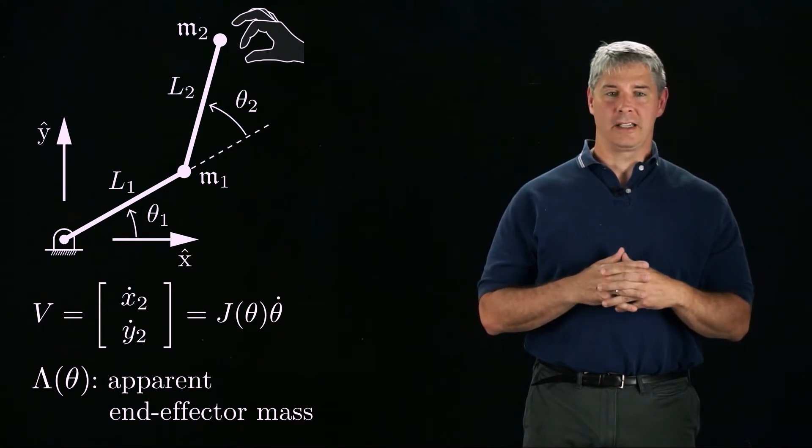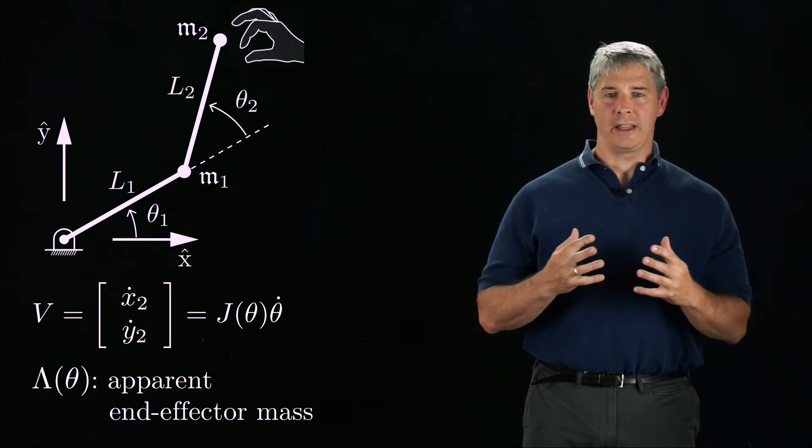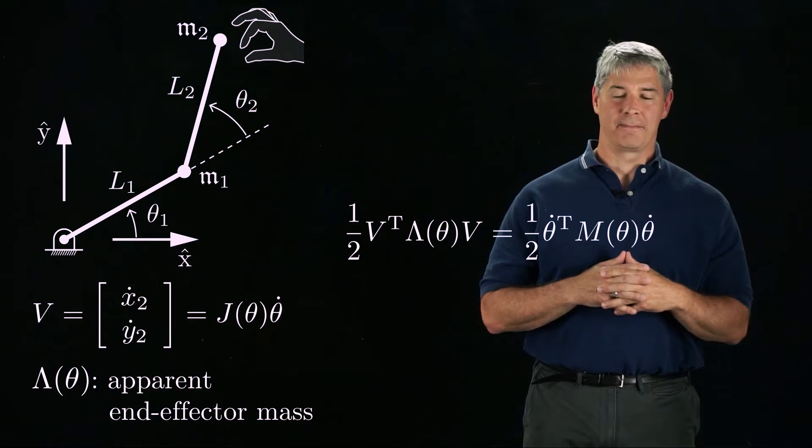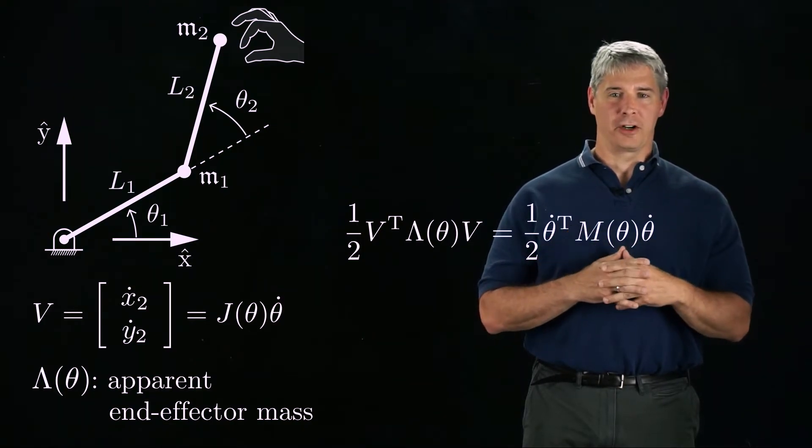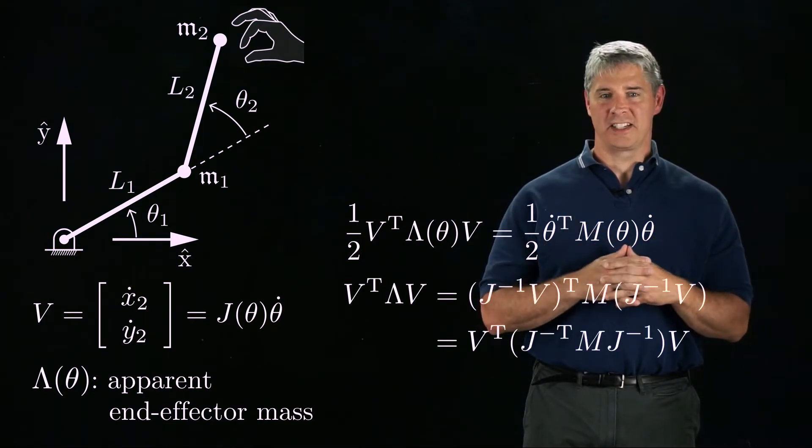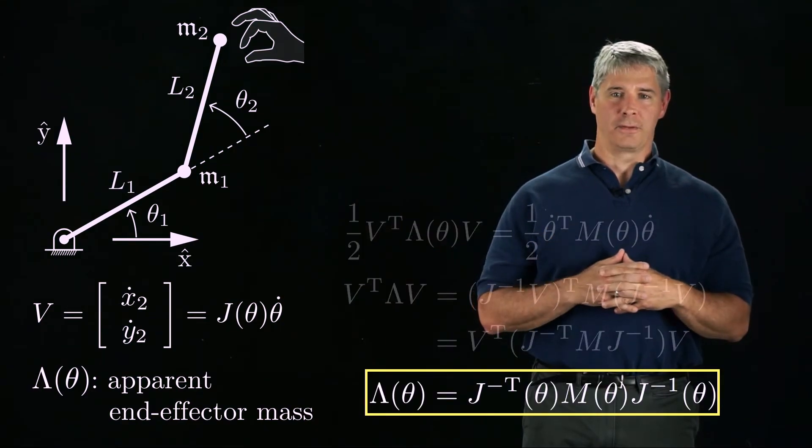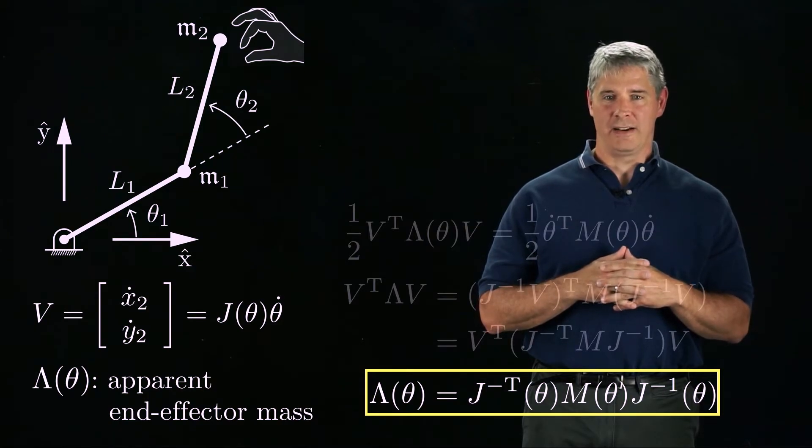To see how lambda is related to the mass matrix M, we can equate the kinetic energy expressed in the end effector velocity and the joint velocity. If the Jacobian is invertible, we can express the joint velocity as J inverse times V, which gives us the relationship we were looking for. The configuration-dependent end effector mass is equal to J inverse transpose times M times J inverse.